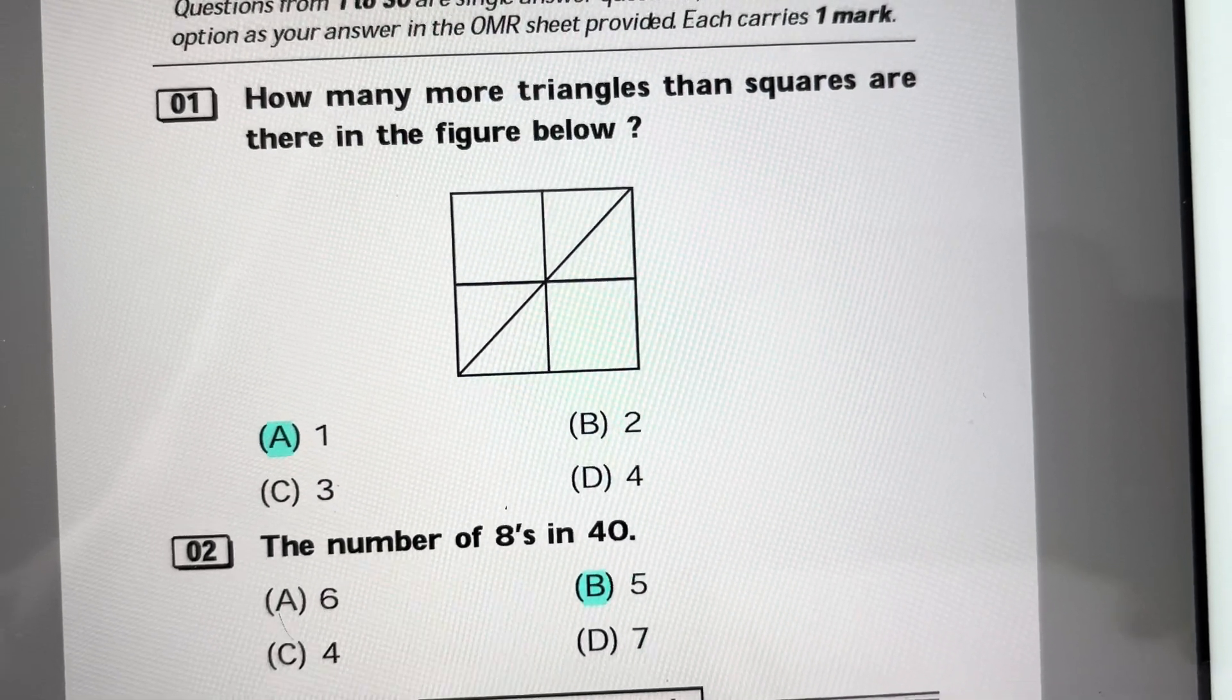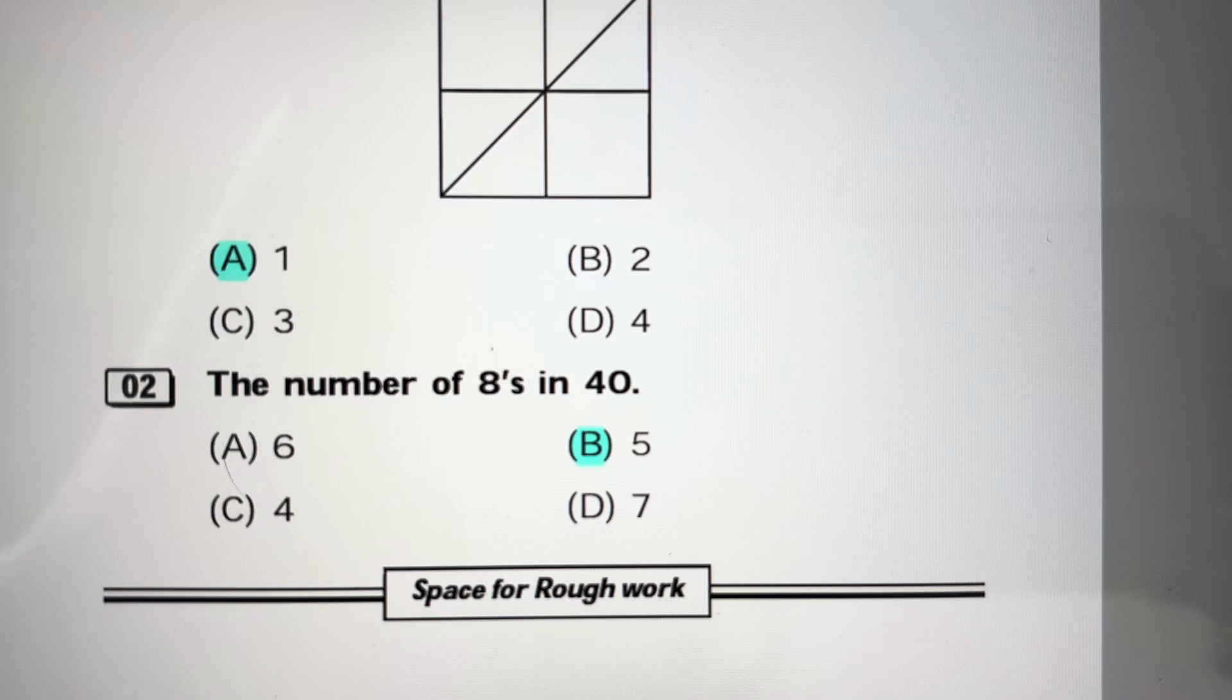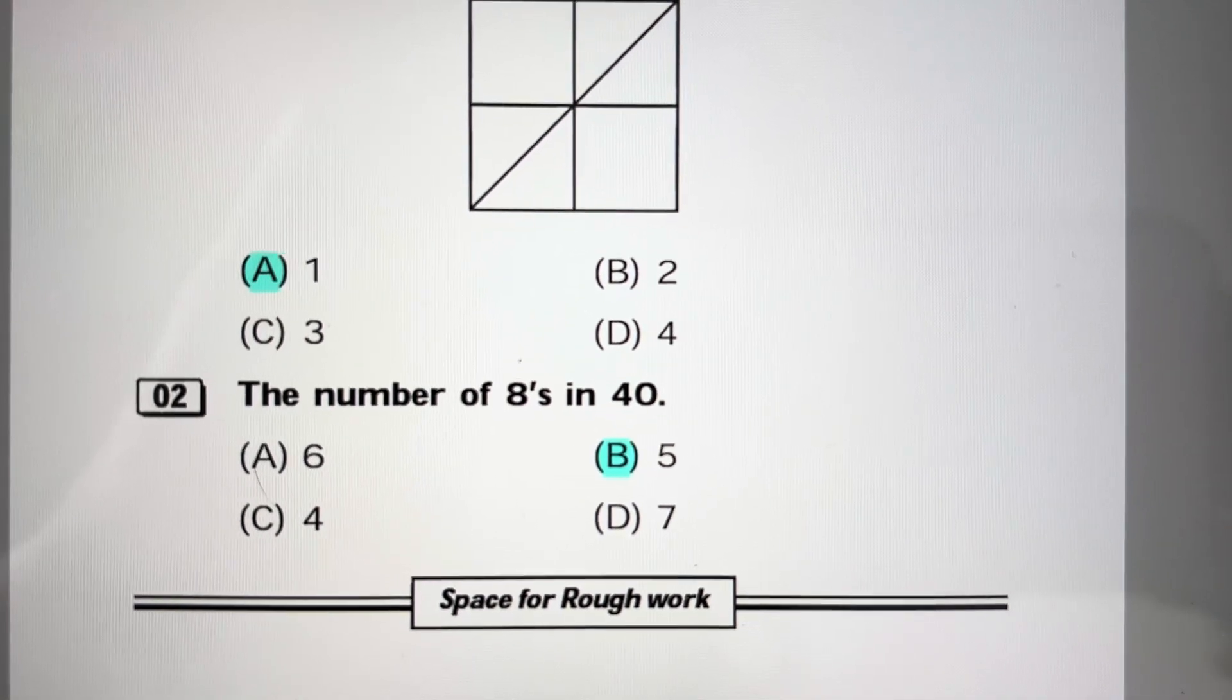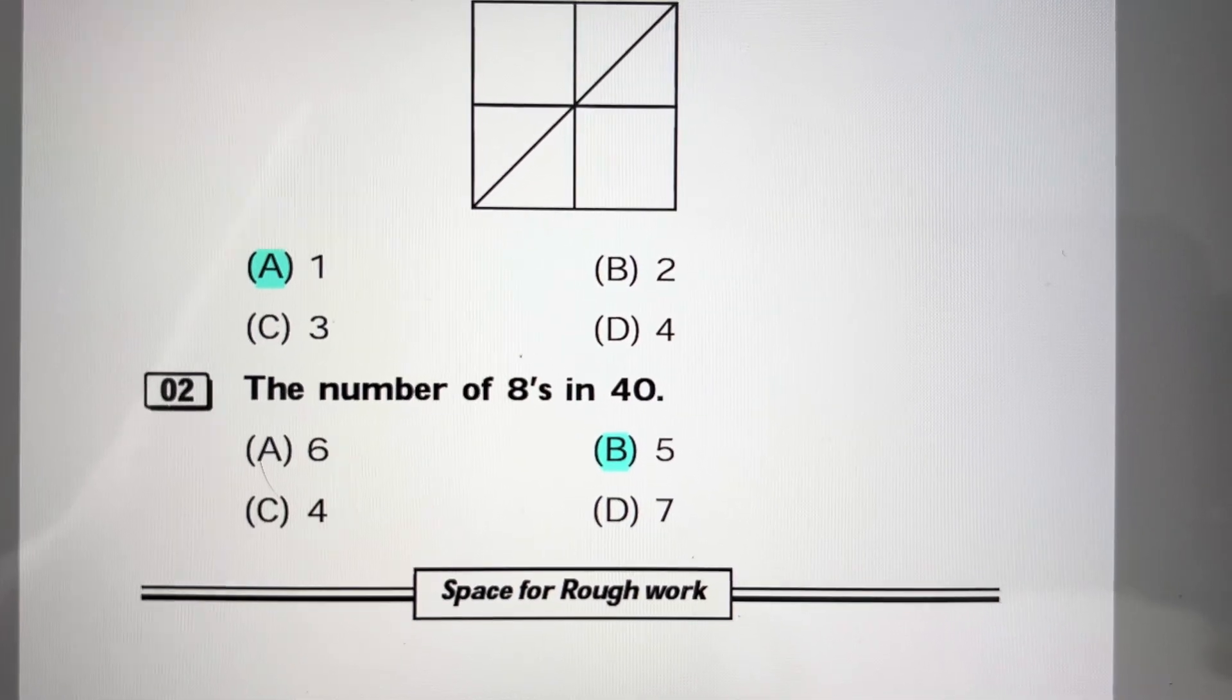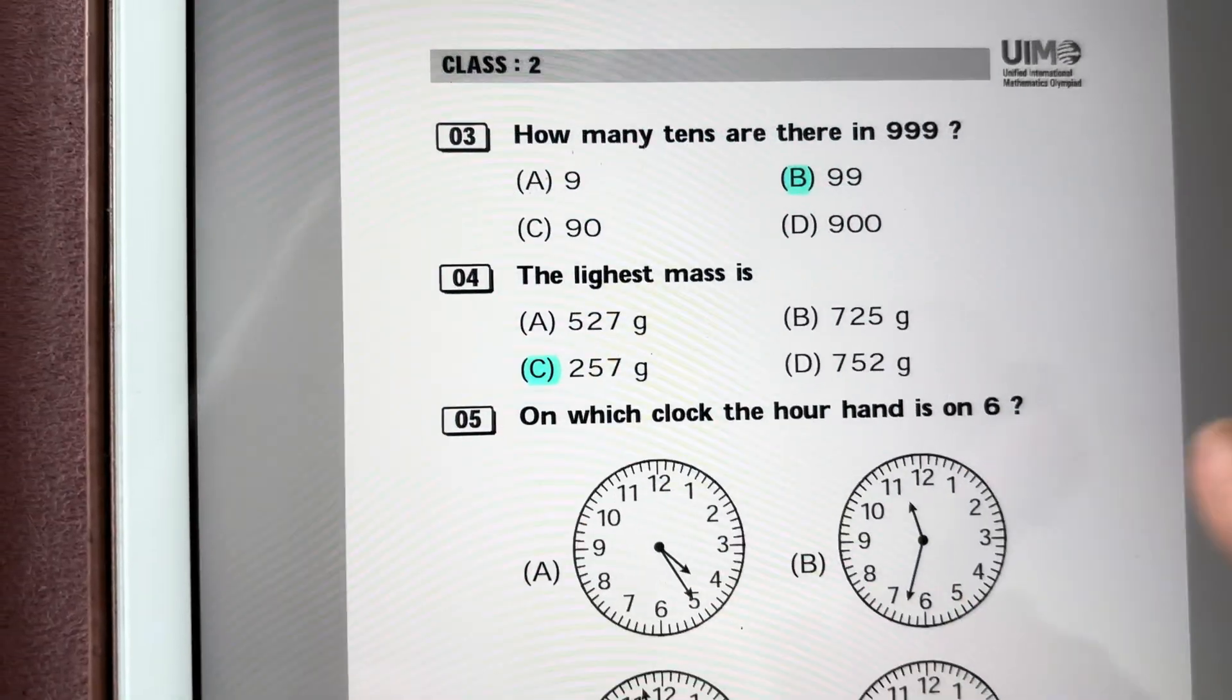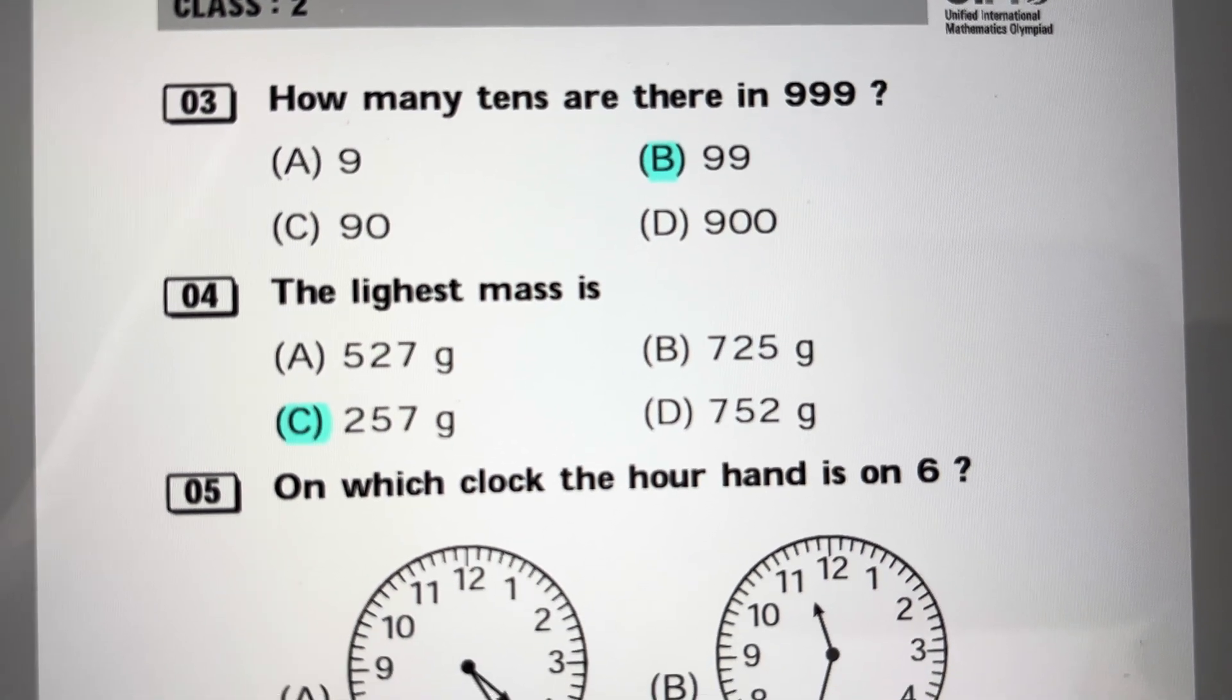Question 2: The number of 8's in 40. 8 fives are 40, so there are 5 eights in 40. Answer is B. How many tens are there in 999? In 999 there are 99 tens, so answer is B.